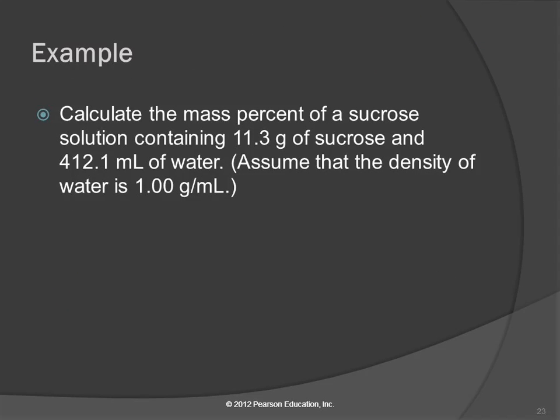Let's do an example. Calculate the mass percent of a sucrose solution containing 11.3 grams of sucrose and 412.1 milliliters of water, assuming that the density of water is 1.00 grams per milliliter. A good place to start is to write down what that means: mass percent equals the grams of solute divided by the grams of solution times 100.